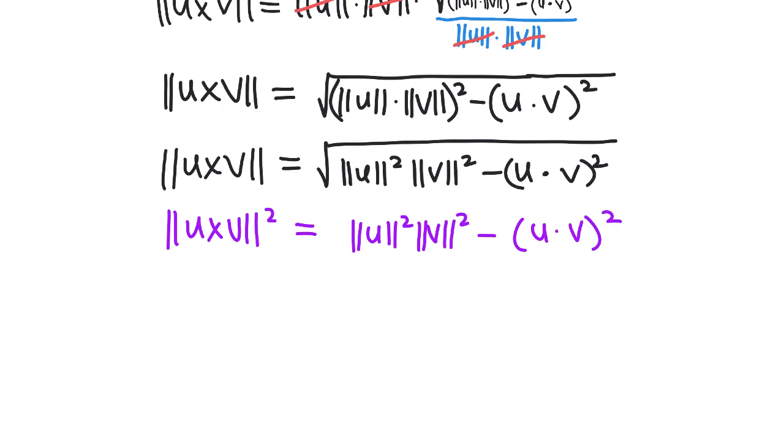If we change things around and add the dot product of u and v squared to both sides, we get this relationship.